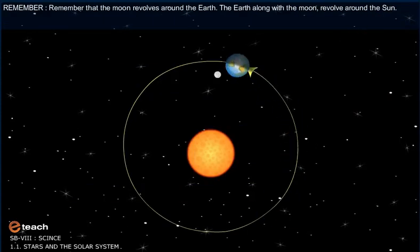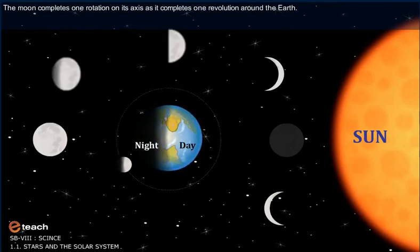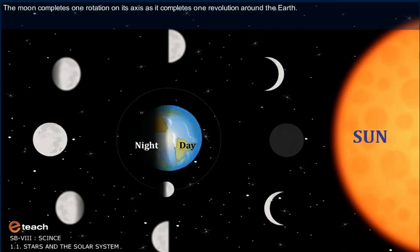Remember that the moon revolves around the Earth. The Earth along with the moon revolve around the sun. The moon completes one rotation on its axis as it completes one revolution around the Earth.